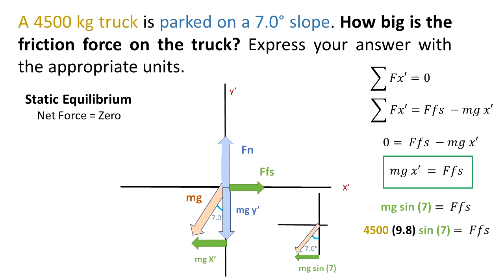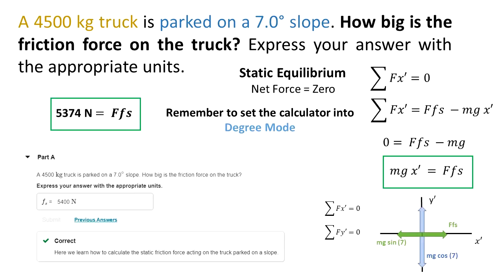And we get that the static friction force that we need to counteract the component of gravity that is trying to slide the truck is equal to 5374 N.